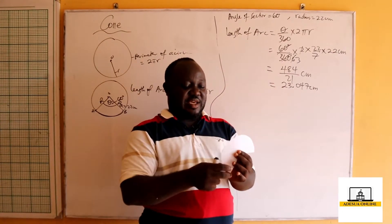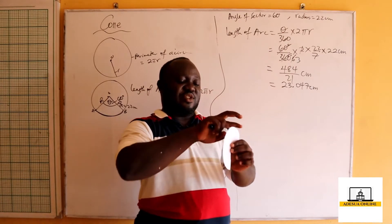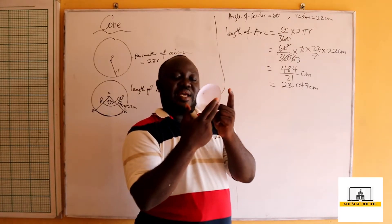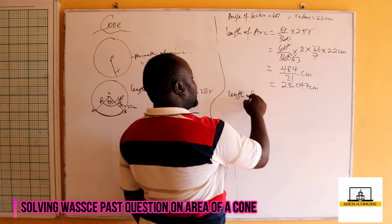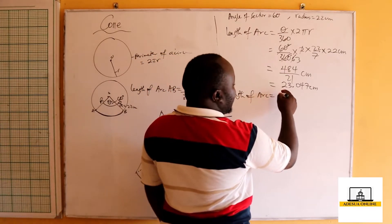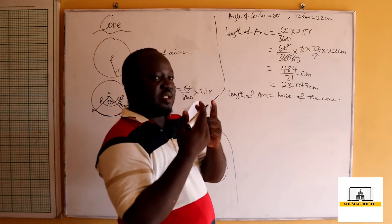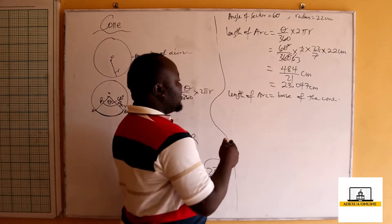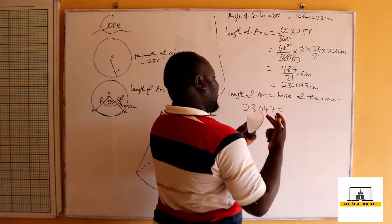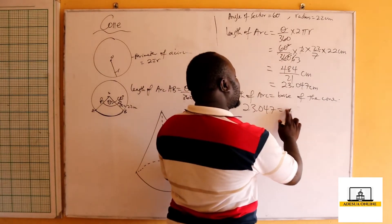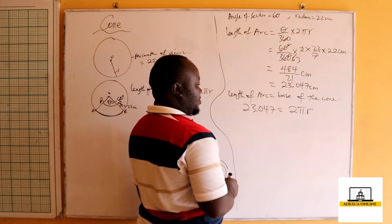When we fold the sector so the straight edges — the radii — coincide to form a cone, we realize that this length of arc equals the base of the cone. The base of the cone is a complete circle, which has circumference 2πr. So we set the arc length 23.047 equal to 2πr, where r is the radius of the base of the cone.